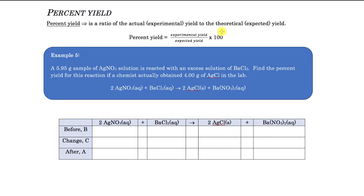So when we take our percent yield and compare what we actually got from the experiment to what we expected to get, that's what we're going to look at. Let's take a look at the example here.